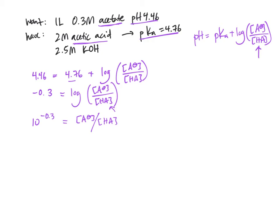Solving that anti-log, 10 to the negative 0.3 is equal to 0.5. So 0.5 is the ratio of acetate to acetic acid here. Another way we could write that is 1 over 2. 0.5. That means one part of acetate to two parts of acetic acid.